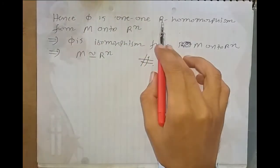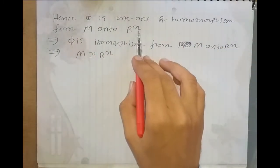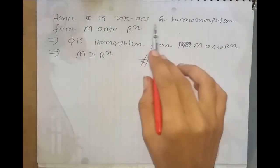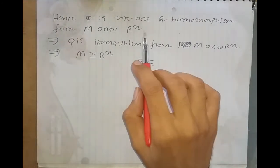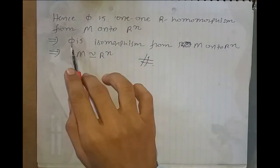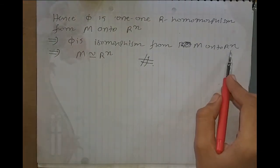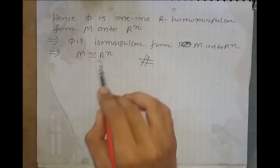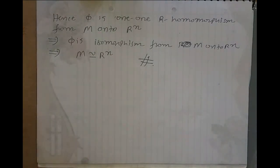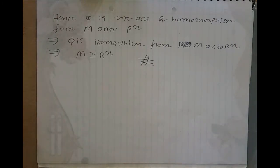Hence φ is a one-one, onto R-homomorphism from M to R^n, which means φ is an isomorphism. Therefore M is isomorphic to R^n. This proves our theorem, and also our syllabus for Algebra 2 is completed. Thank you.